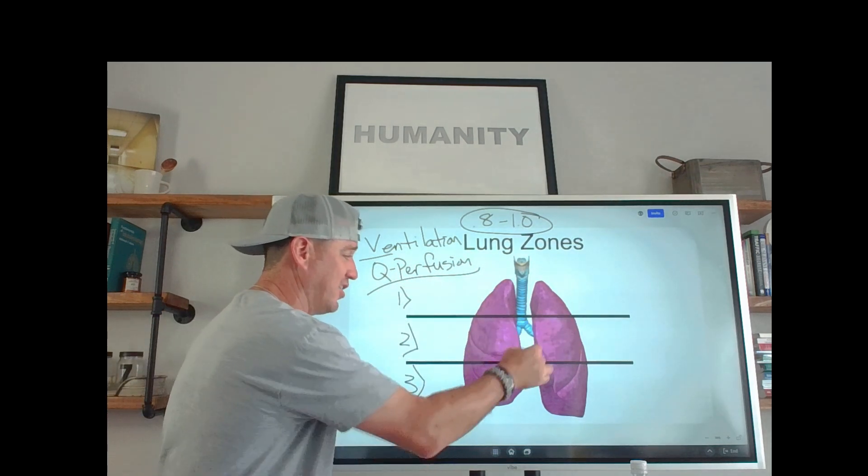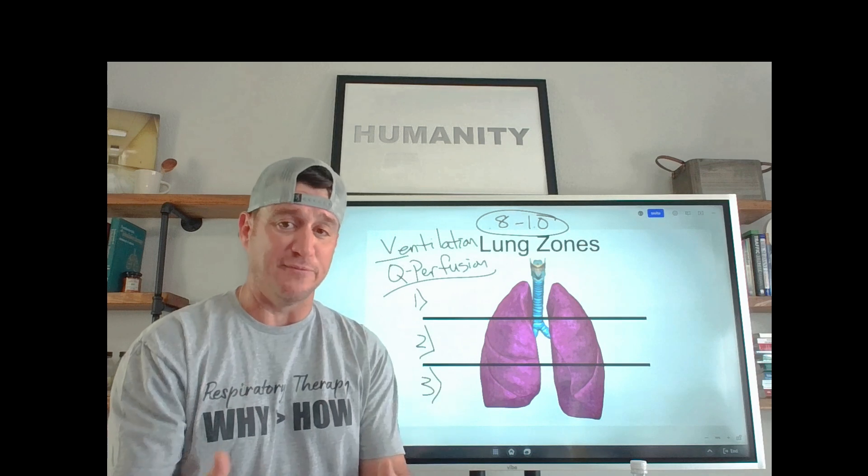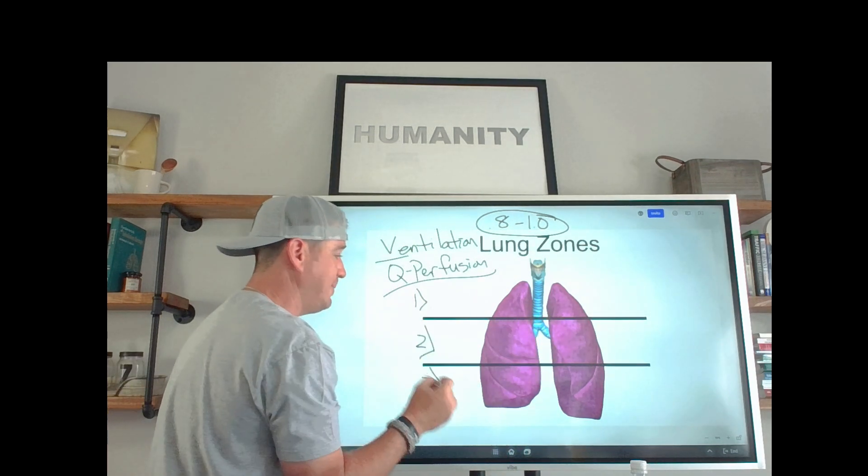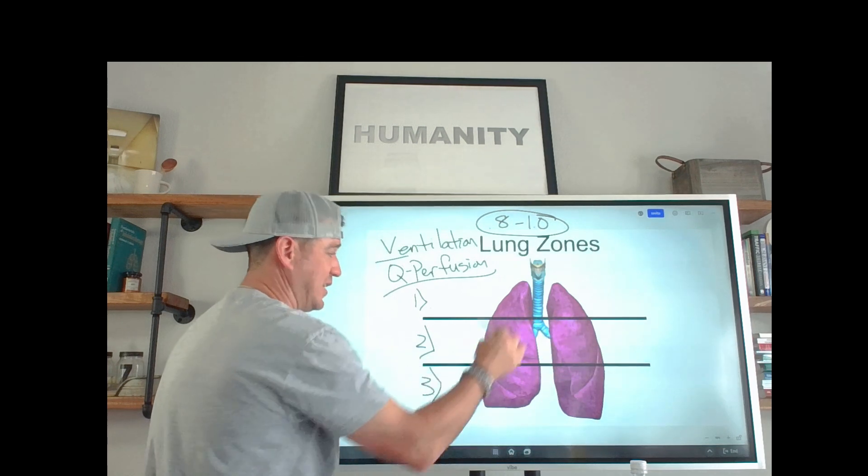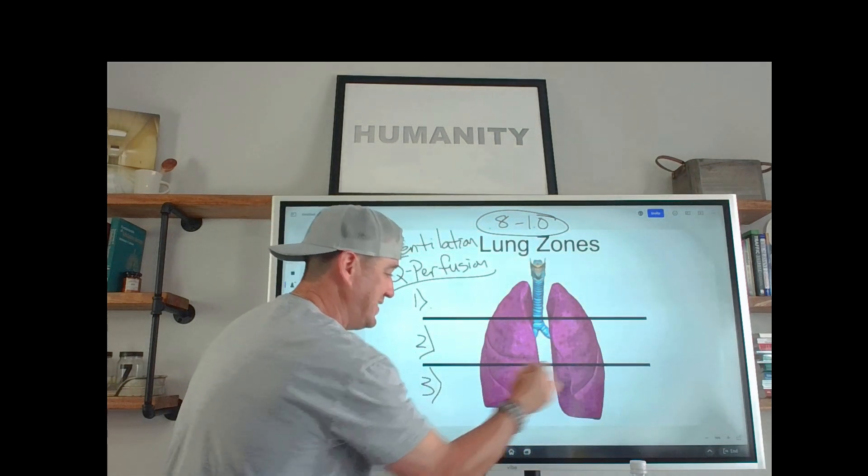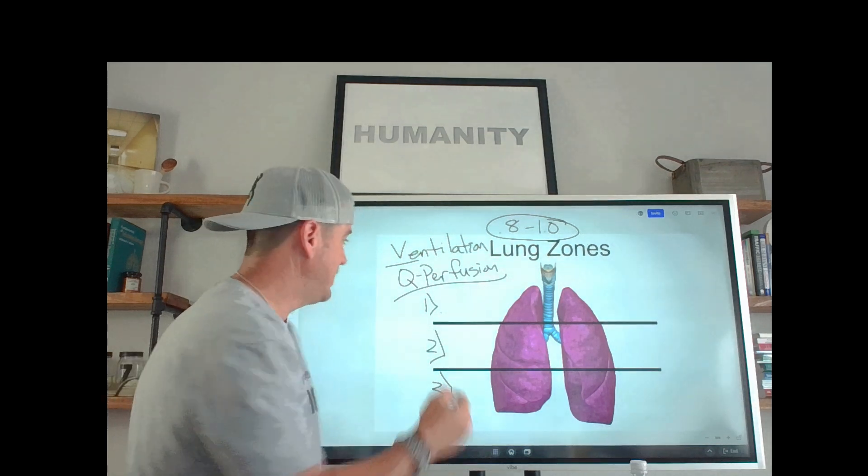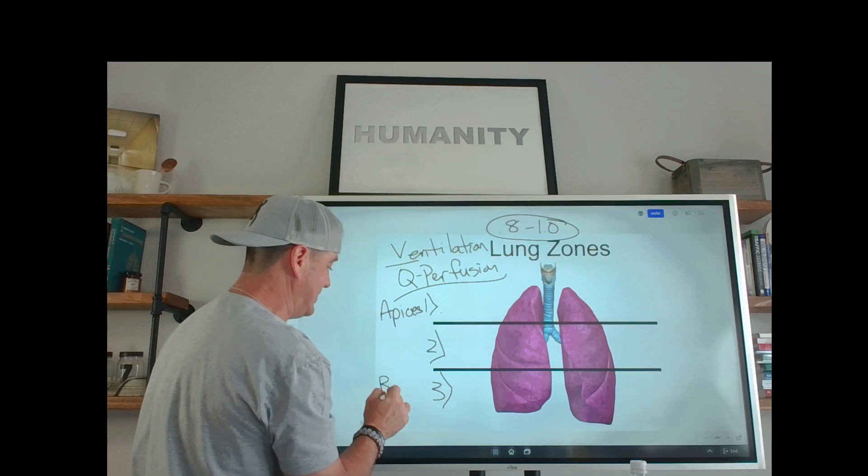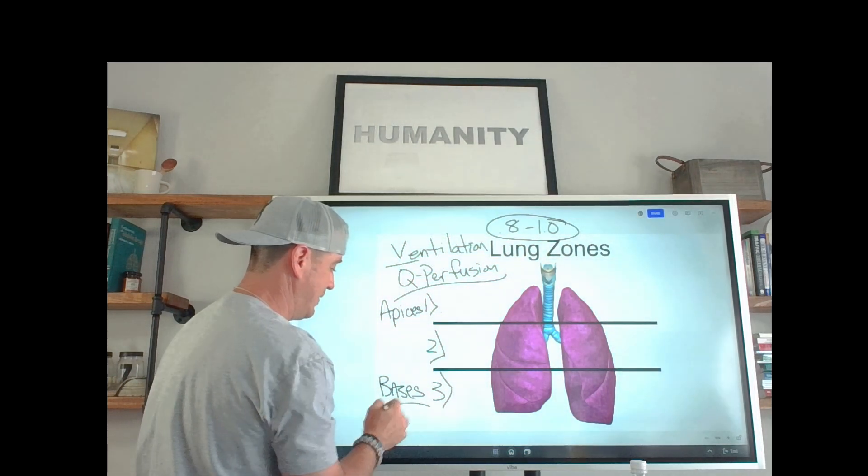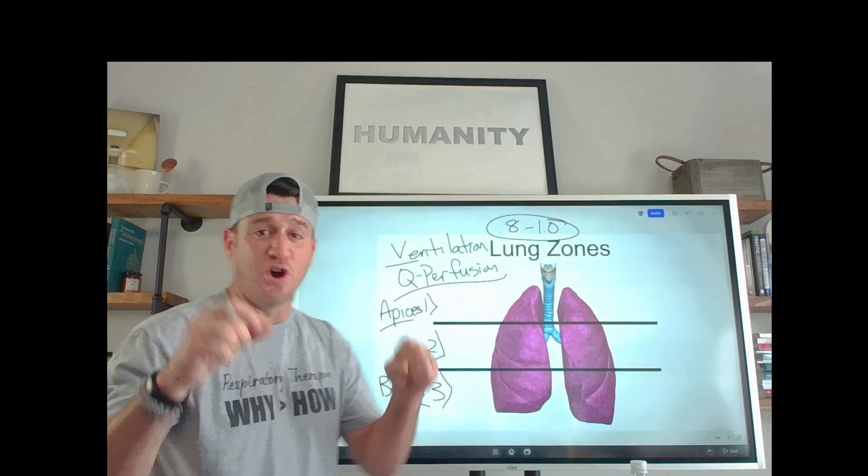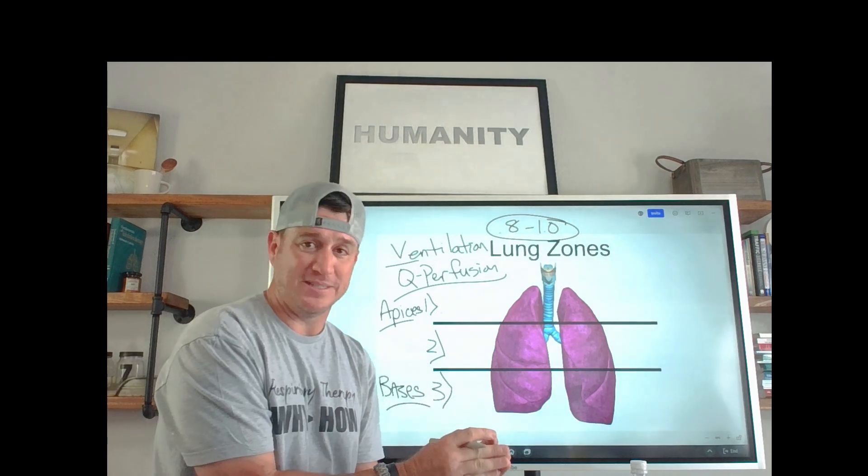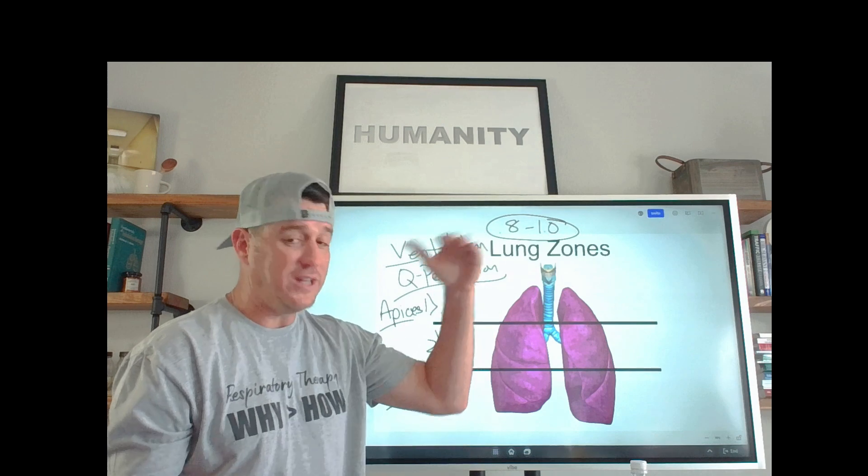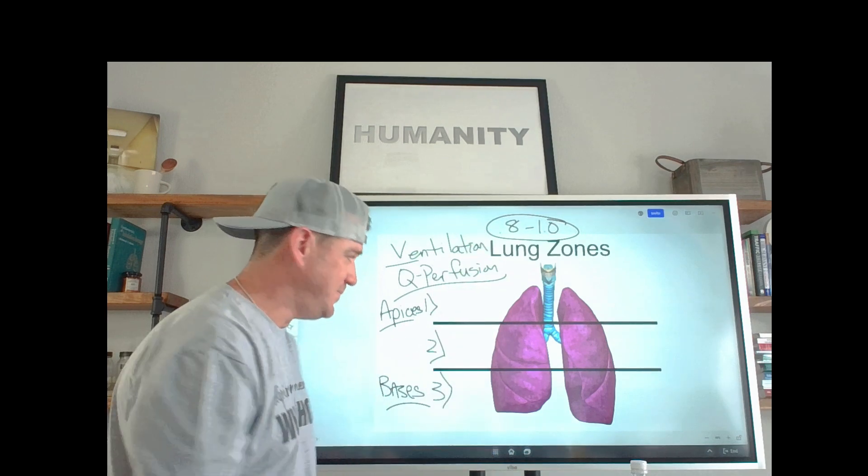Now, I've drawn a line here to differentiate them for you. So you can see that the apices are zone one, the middle portions of the lungs are zone two, and the bases are zone three. So we can come over here and take this another way and say apices and bases. So we understand that. Zone one is tied to the apices. Zone three is tied to the bases. So it goes one, two, three. Makes sense, right?